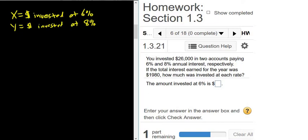Okay, so we invest $26,000 total. So the total amount invested is the money invested at 6% plus the money invested at 8%, and that should equal $26,000, the total money invested. So the money invested at 6% plus the money invested at 8% equals the total money invested.